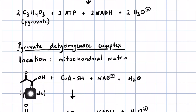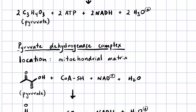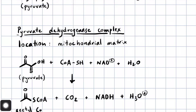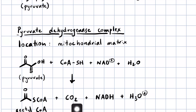We're going to convert pyruvate into a molecule called acetyl-CoA. It's an acetyl group bound up in a thioester with a thiol which we've named CoA-S. We'll show you what the structure of CoA is, but this is one of the CO2 groups that we lose as we convert glucose all the way to CO2.